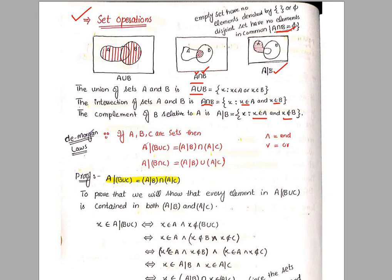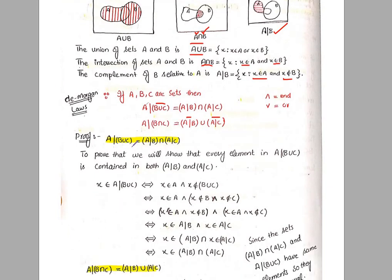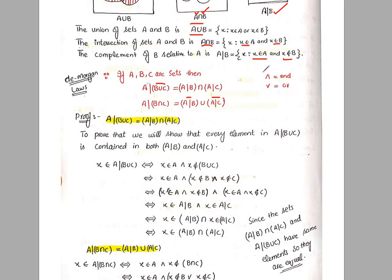Next is a most important result — the De Morgan Laws. We will state and prove them. If A, B, C are sets, then: first, A \ (B ∪ C) = (A \ B) ∩ (A \ C); second, A \ (B ∩ C) = (A \ B) ∪ (A \ C). These are De Morgan's Laws. We will prove them here. We will use the symbol ∧ for 'and' and ∨ for 'or'. First, we will prove A \ (B ∪ C) = (A \ B) ∩ (A \ C).